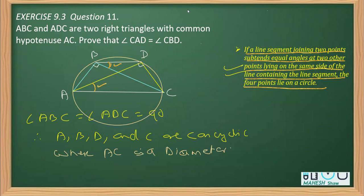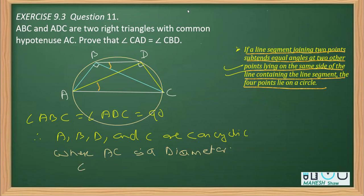Since AC is a diameter, the two angles we need to prove equal — angle CAD and angle DBC — are angles subtended by the same chord DC, on the same segment. By the property of angles on the same segment, we can therefore write: angle CAD equals angle DBC.